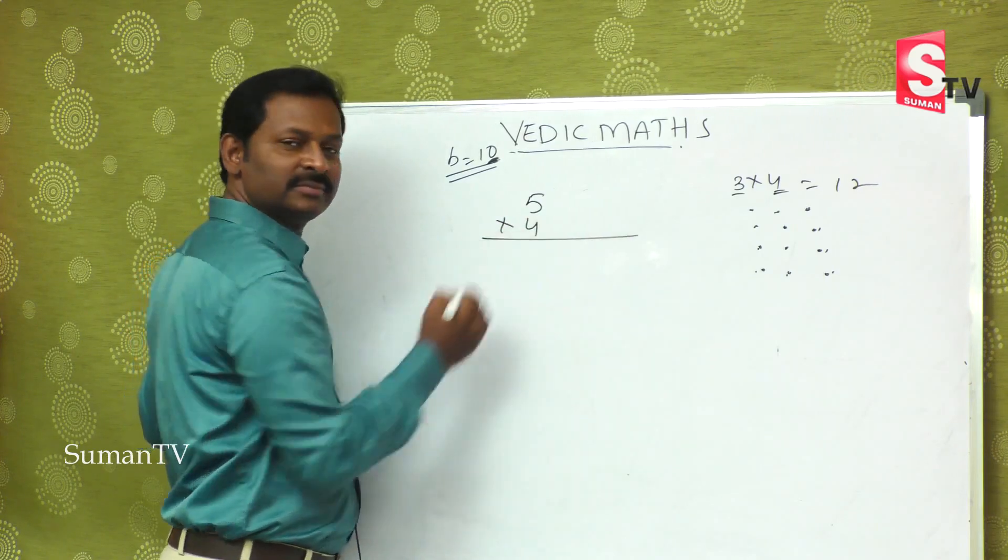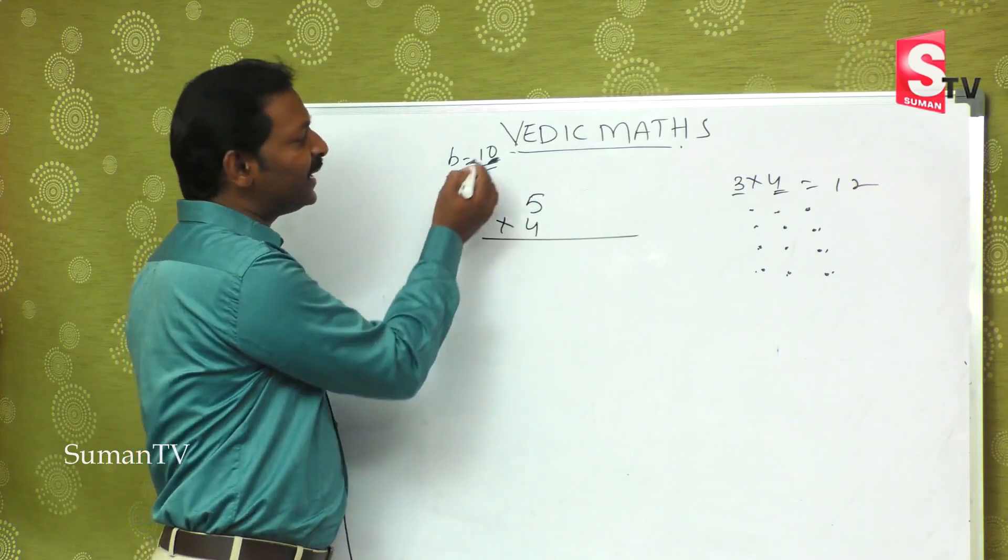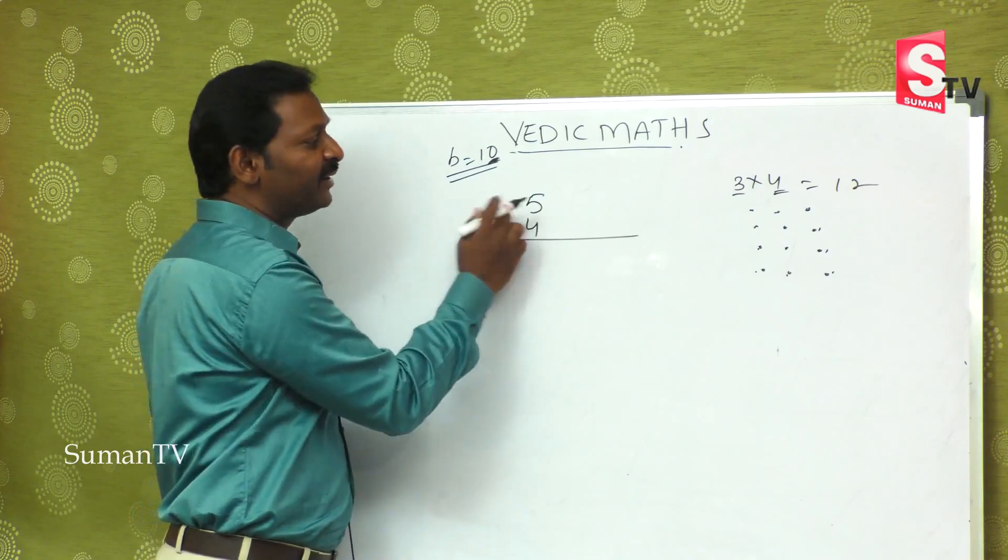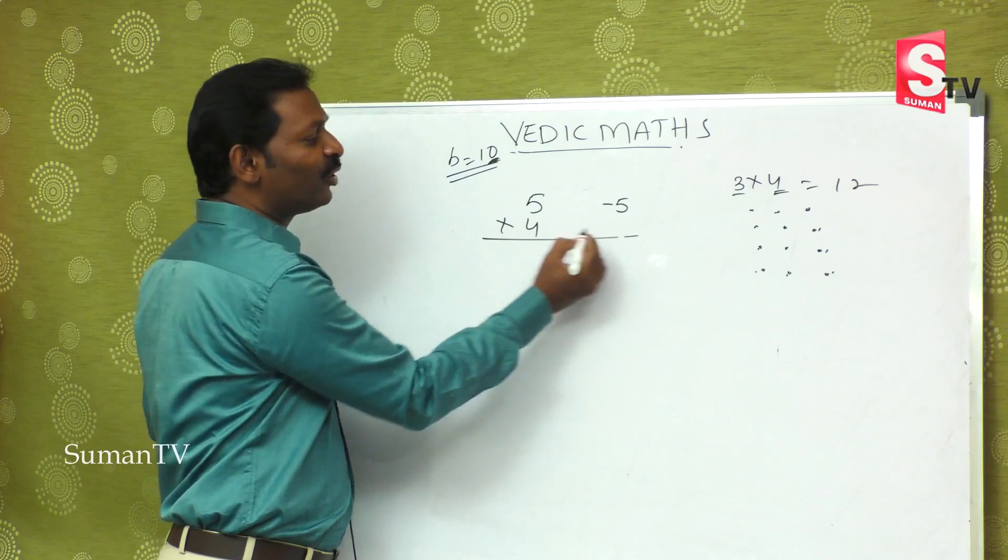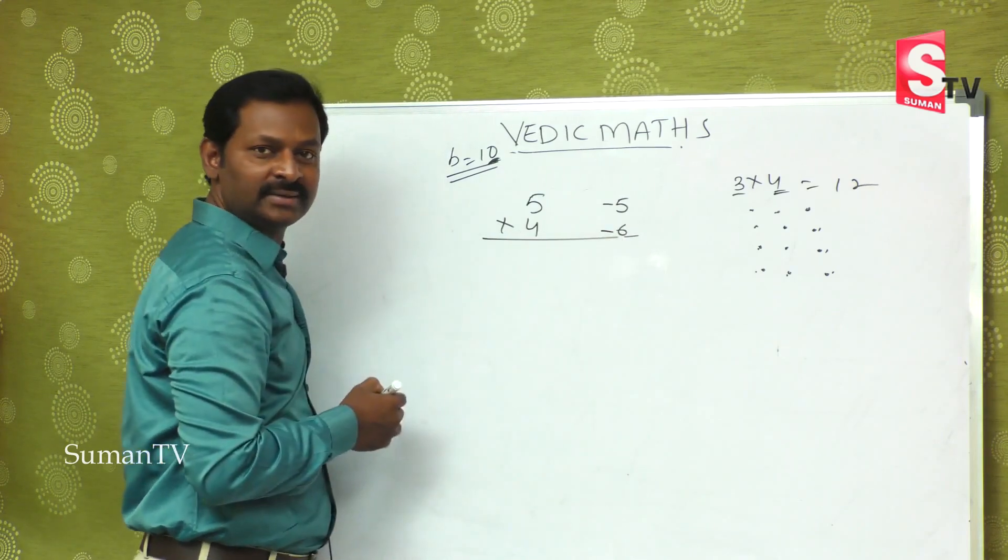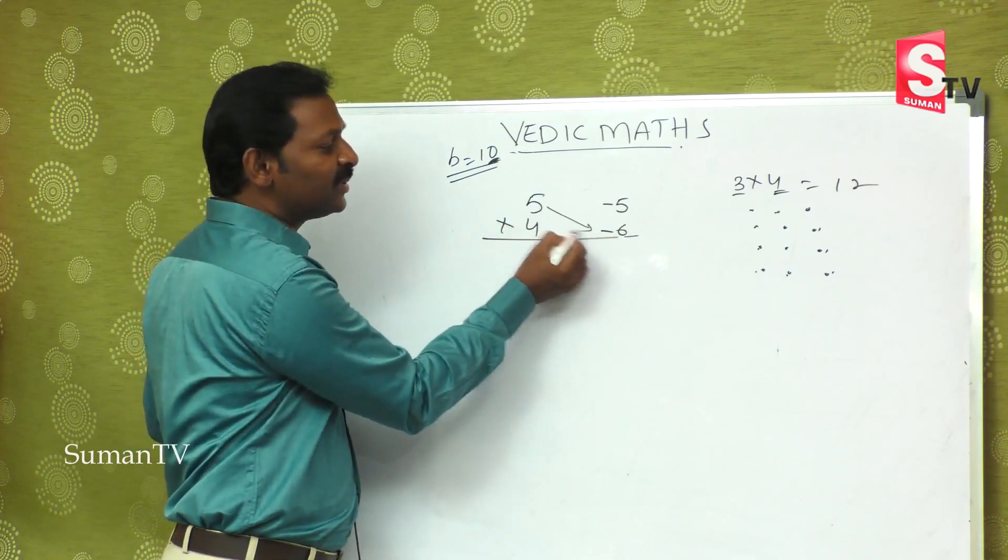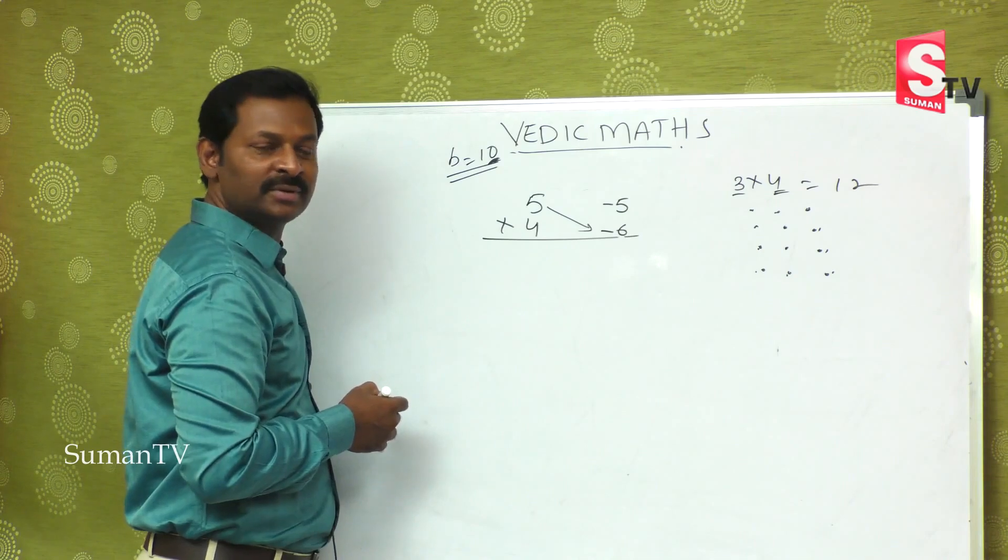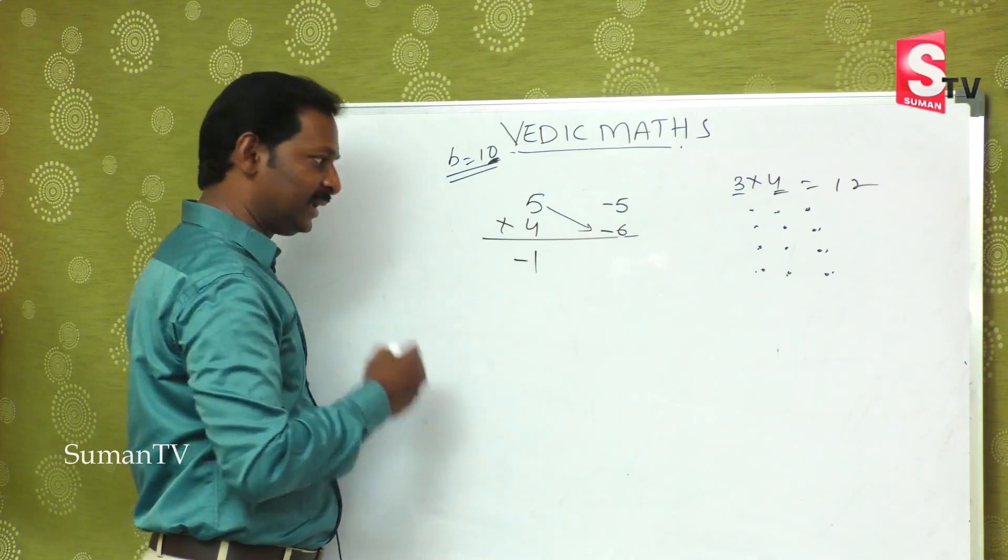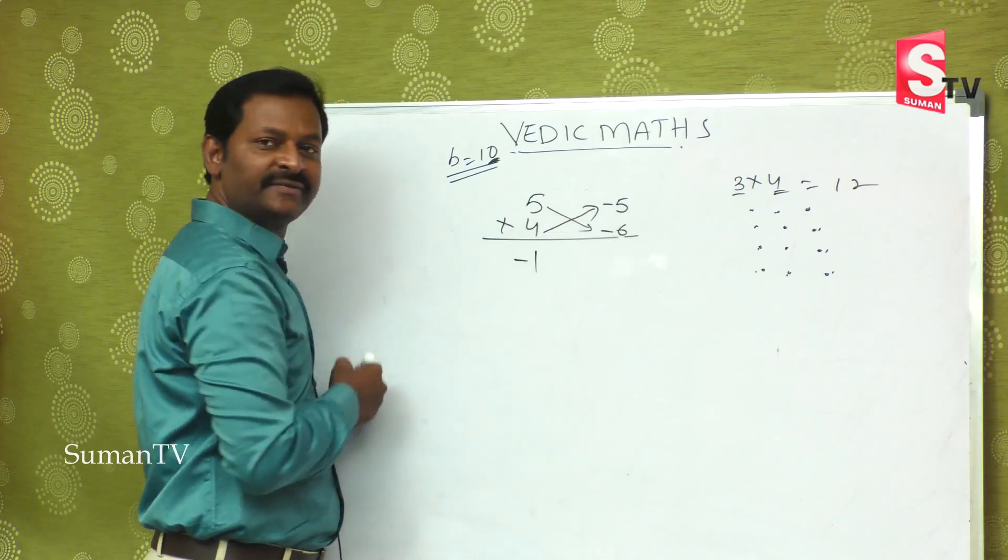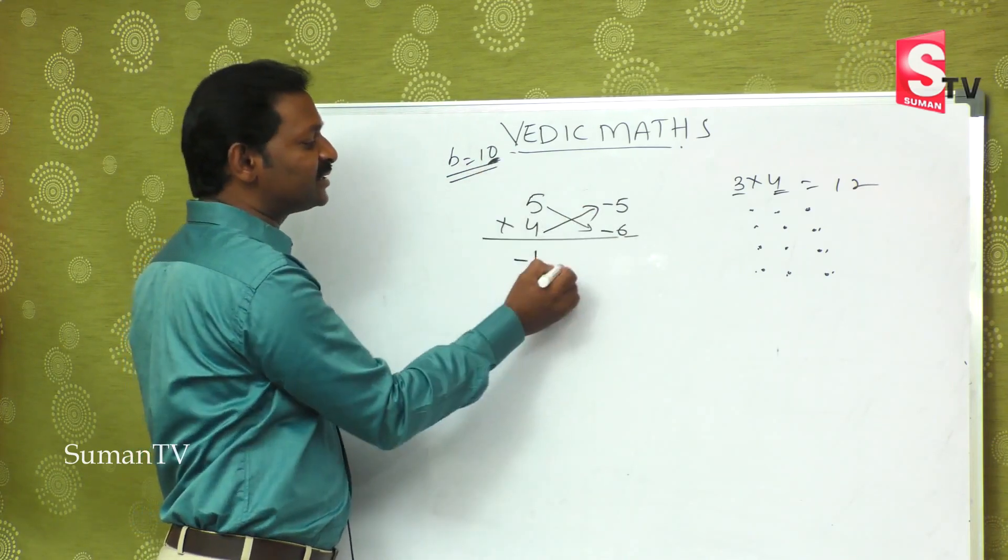So next step, 10 has one zero. Now see this, minus into minus is plus, 3 × 1 is 3, so 63 is the answer. Suppose you ask, sir, what if 9 is bigger? It doesn't matter. Suppose 5 is multiplied by 4. We'll take small number, but the base is still 10.